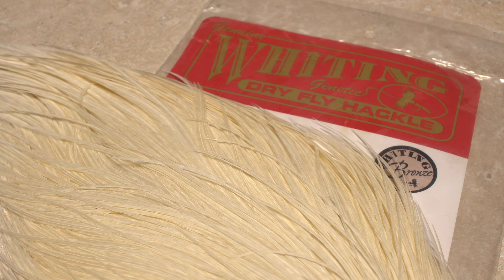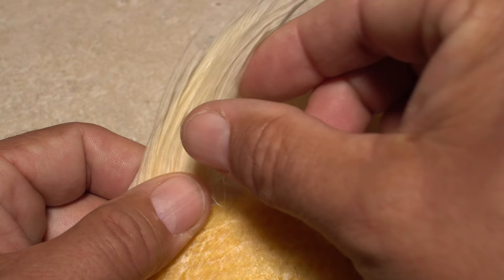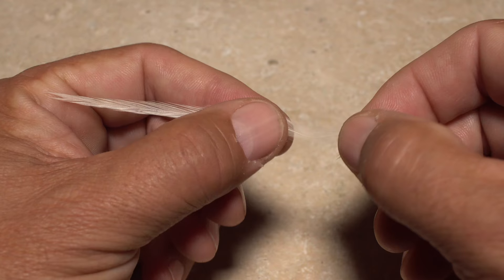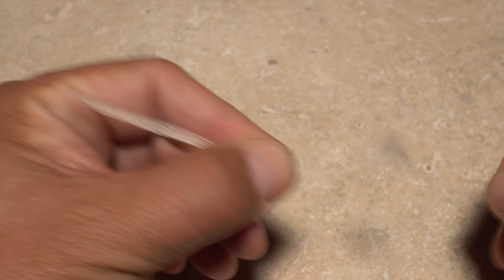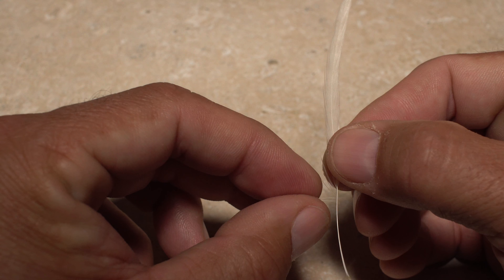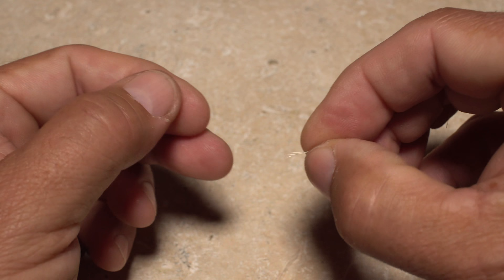Cream or white dry fly hackle fibers are used to form the tail of the fly. The feathers out by the edge of the neck usually have nice stiff straight fibers. After plucking a single feather free from the skin, preen down and strip off the lower fibers that are fuzzy and webby. Then get hold of three or four straight fibers, pull them down perpendicular to the stem, and while keeping their tips aligned, strip them free.